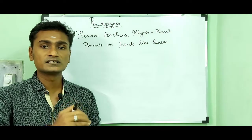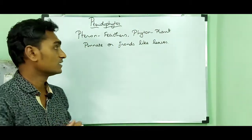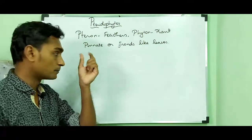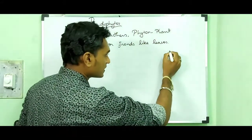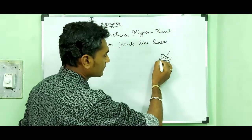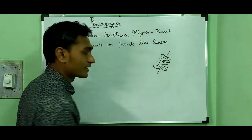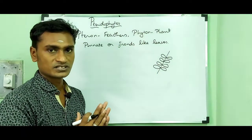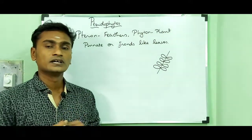So pteridophyte is a term derived from Greek language where pteron means feathers and phyton means plants. Pteridophyte leaves are frond-like leaves. Pinnate means it is a compound leaf — a common rachis which bears many leaflets arranged alternately or oppositely. That leaf is called a compound leaf, and frond-like leaves are feather-like leaves.